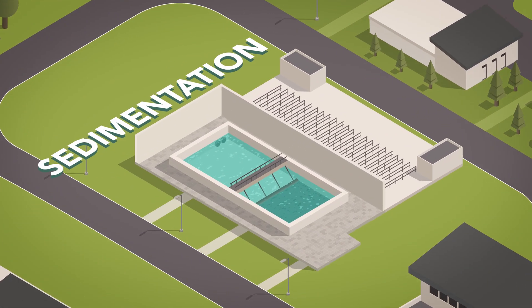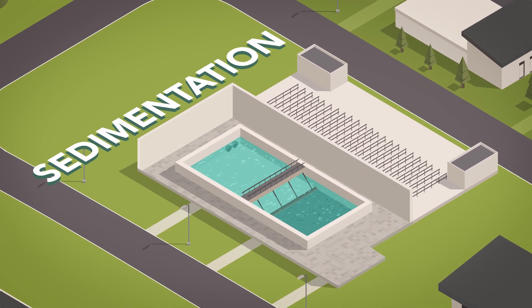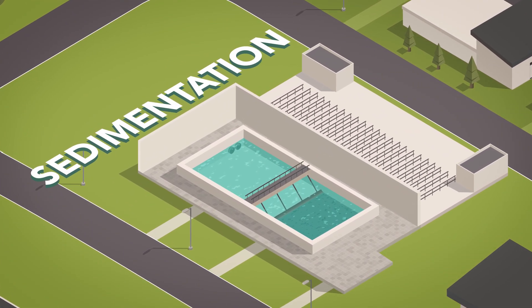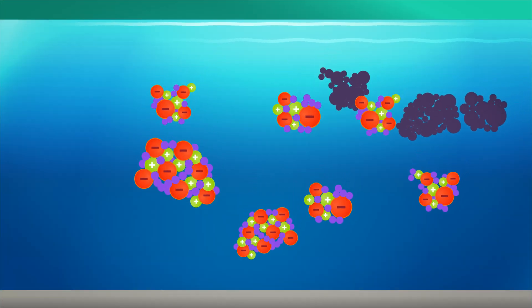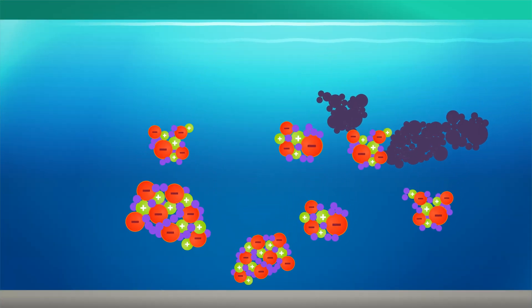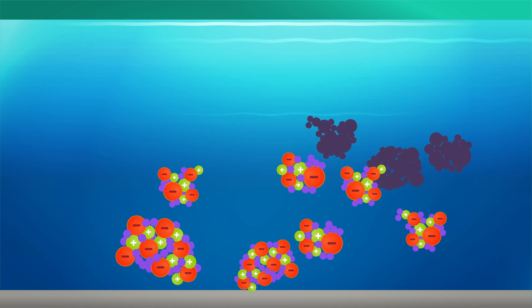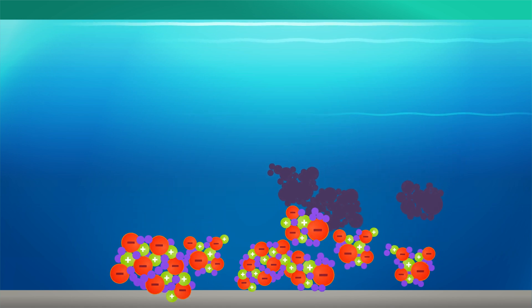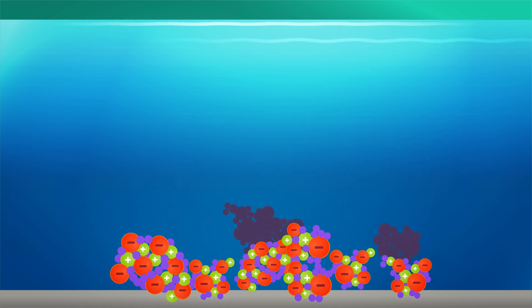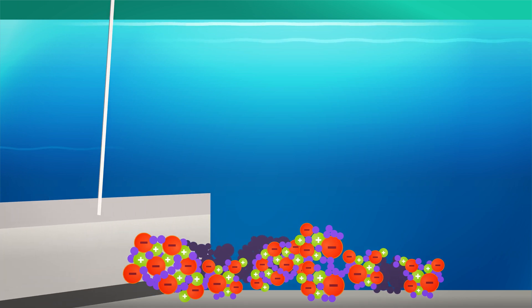In the next step, water moves to the sedimentation building. During the sedimentation process, the heavy floc particles start at the top of the tank, then gravity causes them to fall to the bottom. As the floc piles up, a scraper moves across the bottom and removes the sludge.